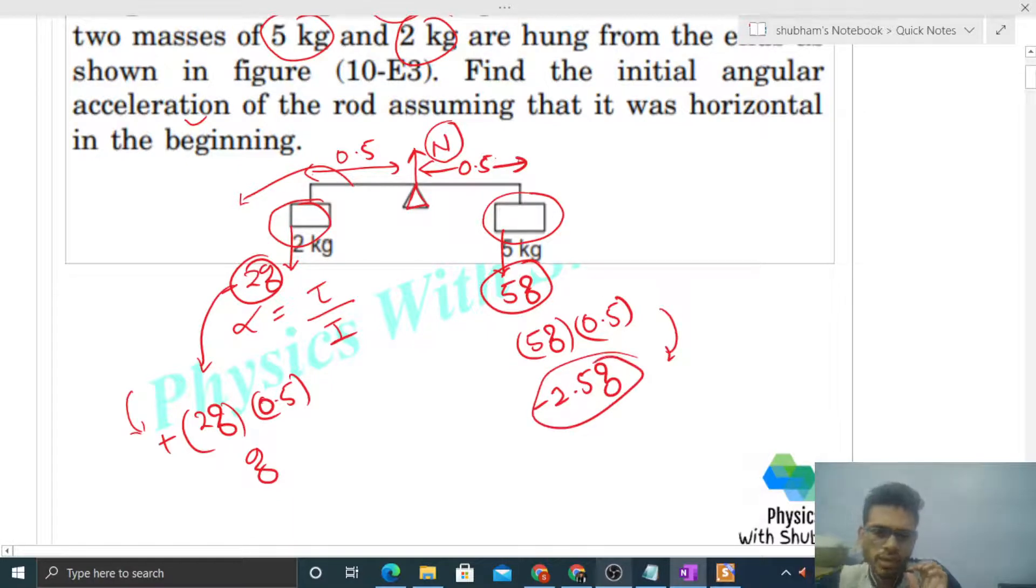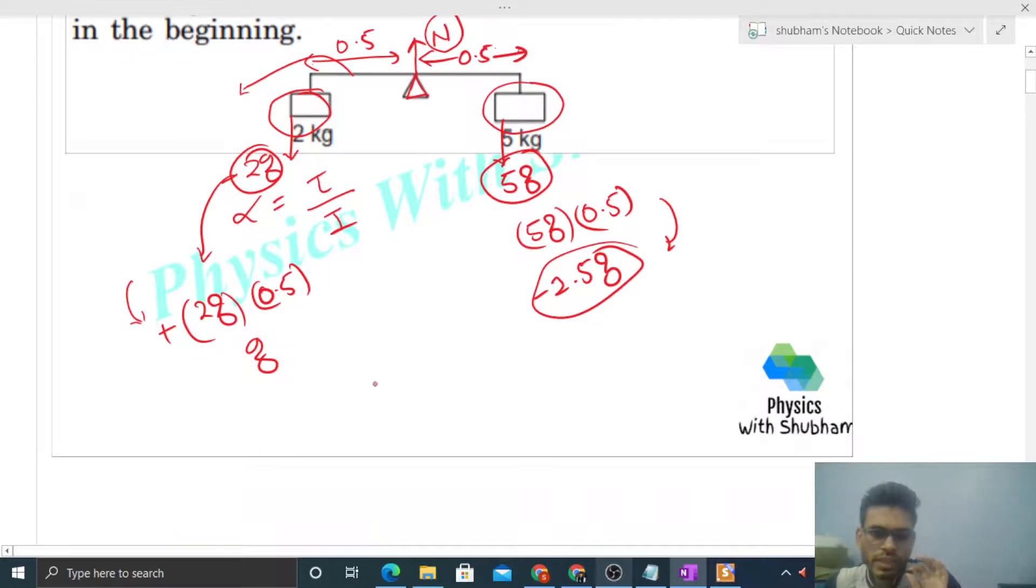This is clockwise, we have minus to denote it. So what is the net torque about the center? If you sum it, it is minus 1.5g. That is the net torque, which is clockwise.